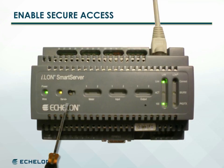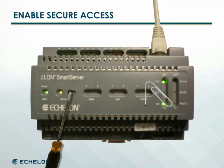To perform a secure access reset, hold down the service button with a small screwdriver as shown, and use a small wire such as a paper clip to press the reset switch located just below the output LEDs.